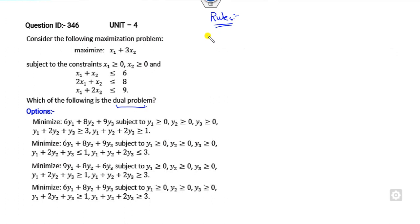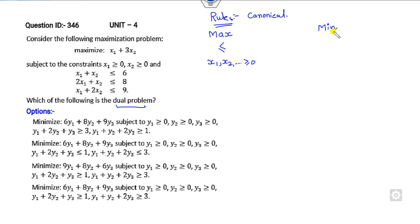What are the rules? Firstly, we are working on the canonical form of the LPP. What is the canonical form? Whenever you have a maximization problem, all the constraints are less-than signs and x1, x2, x3 are all greater than 0. Or if you have a minimization problem, all the constraints are greater-than signs and x1, x2 are all greater than 0. If this is the primal, then that is the dual, and vice versa.